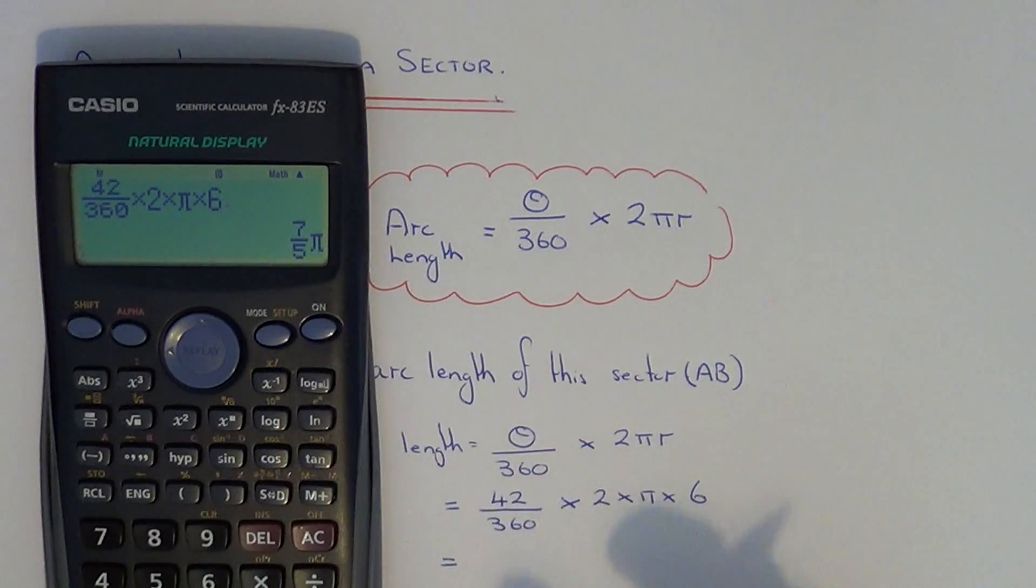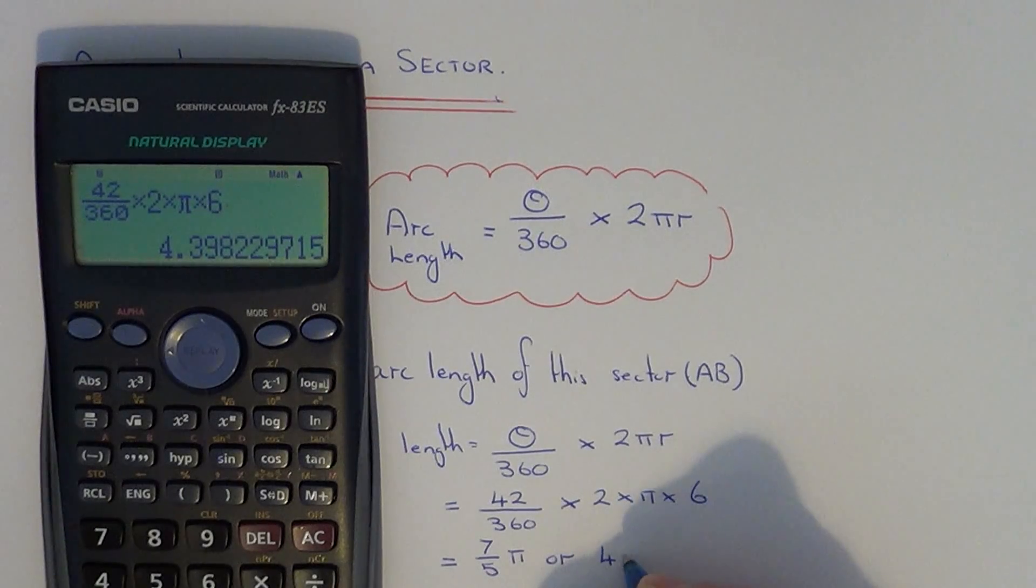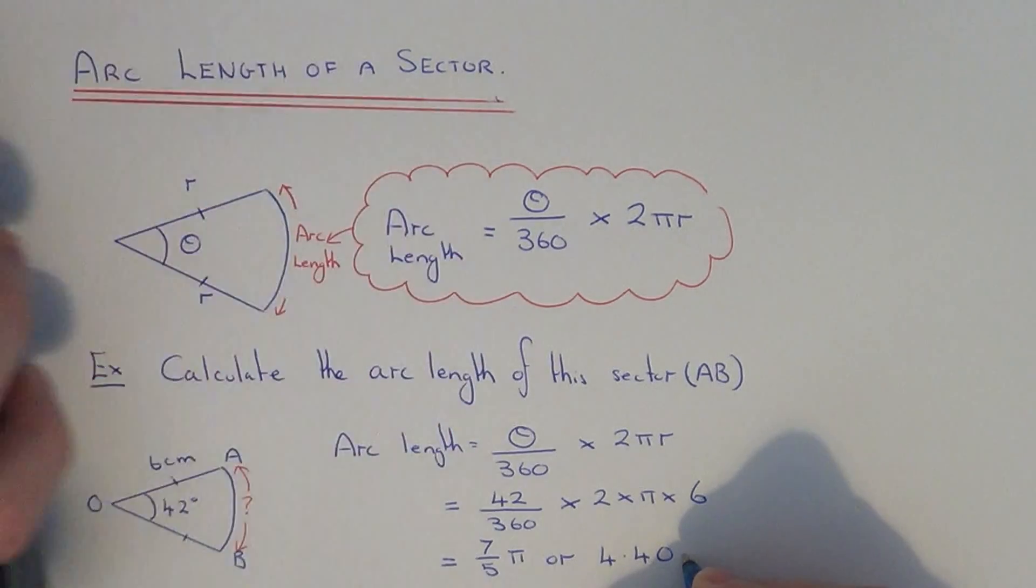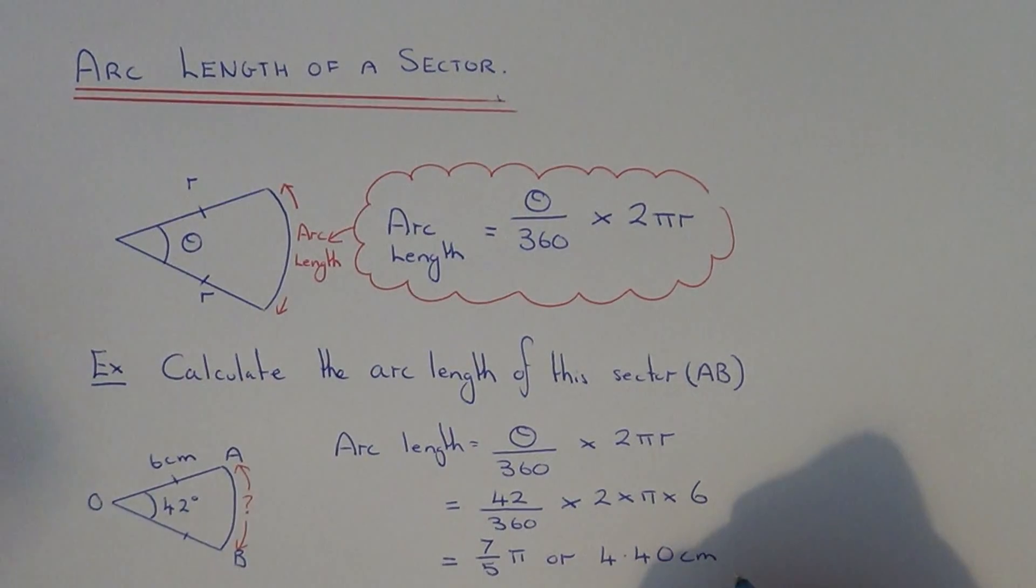So we get the answer 7 fifths π, or if you want that as a decimal, we get 4.40, and that's to 3 sig figs. Don't forget the units, which is centimeters.